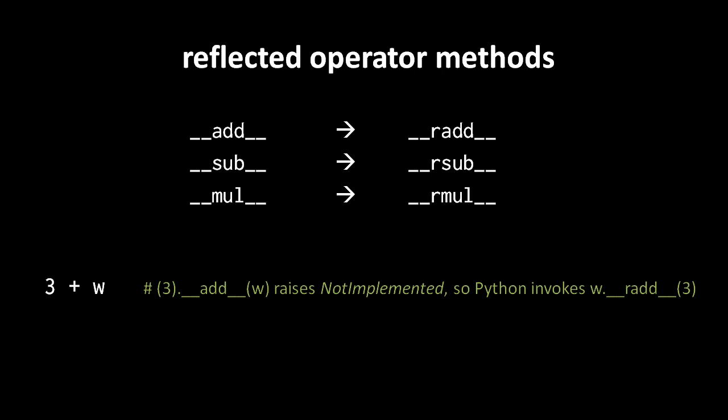However, with some types you might define, you might decide that you want there to be some non-commutative behavior. So you might want 3 plus w to do something different than w plus 3. So that's why we have this reflected add method. Because sometimes you want there to be different behavior. If instead Python just assumed that these operations should always be commutative, then we wouldn't have the reflected operator methods.